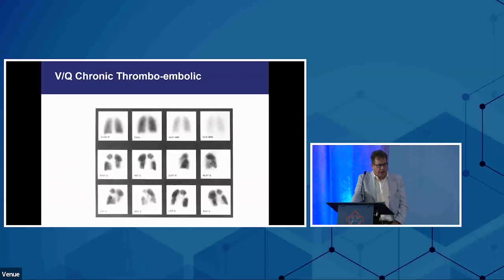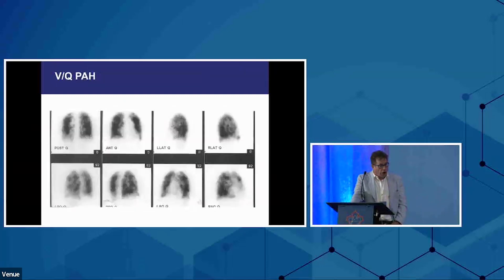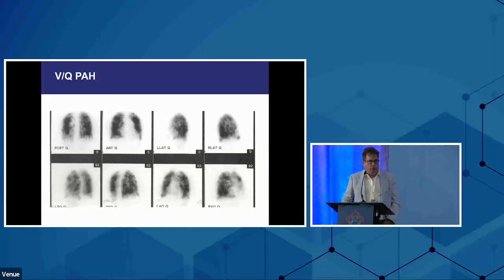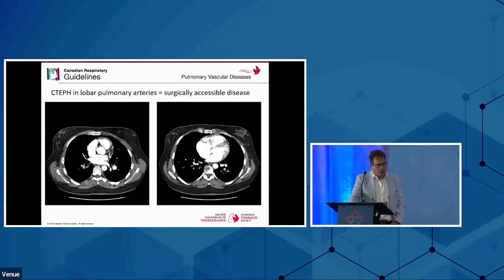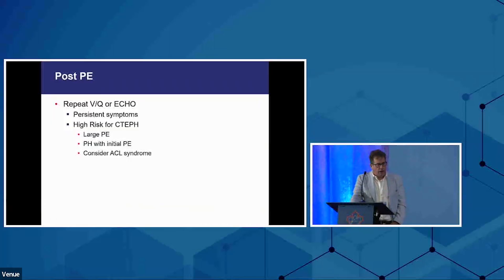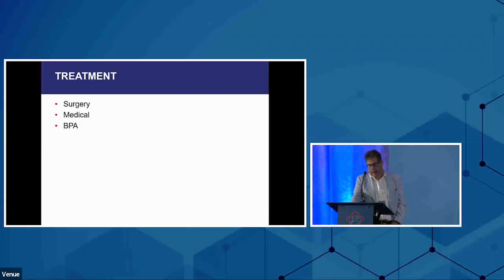On VQ scanning, large segmental defects are pretty diagnostic of CTEPH, whereas a mottled appearance is much more common in other forms of small vessel pulmonary hypertension. CT is still useful to tell us where the clots are — you can see more chronic changes such as webs, arterial irregularities, prominent bronchial arteries, and mosaic perfusion. So after an acute PE, if patients have persistent symptoms or are at high risk for CTEPH, I screen with VQ scan and/or echocardiogram.